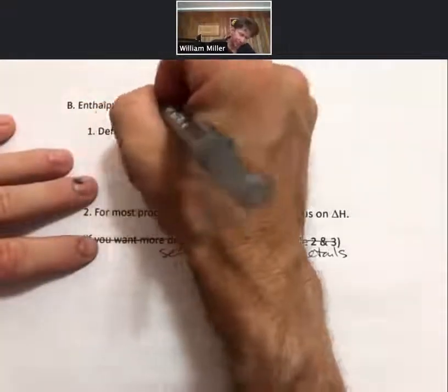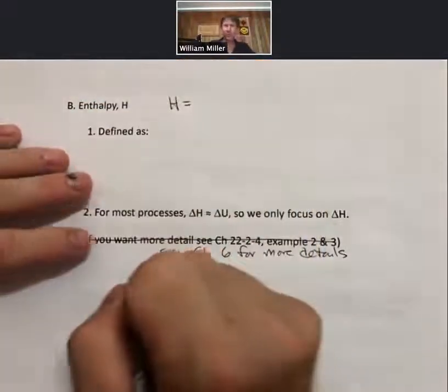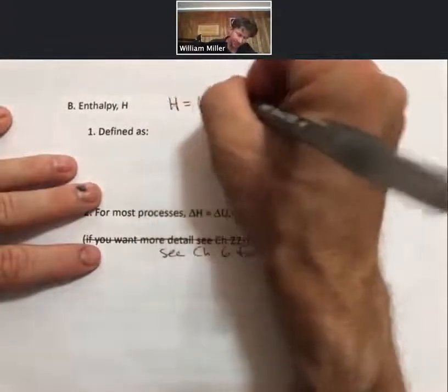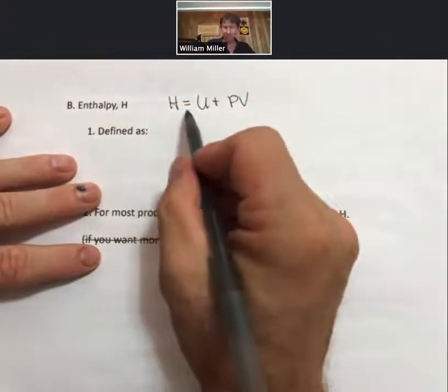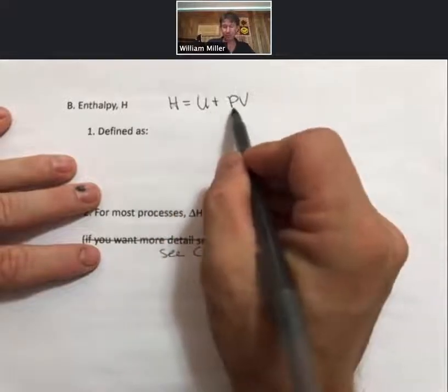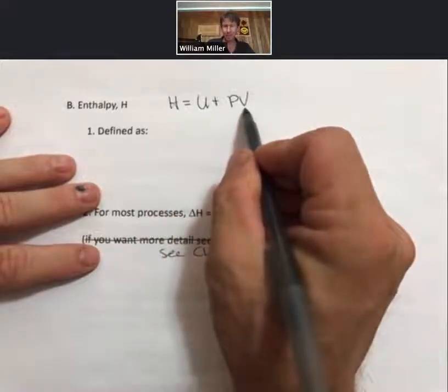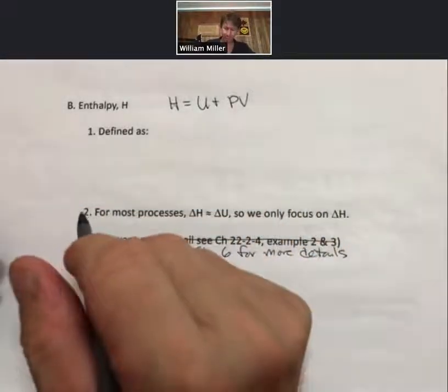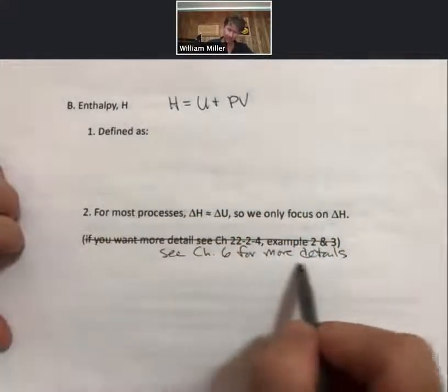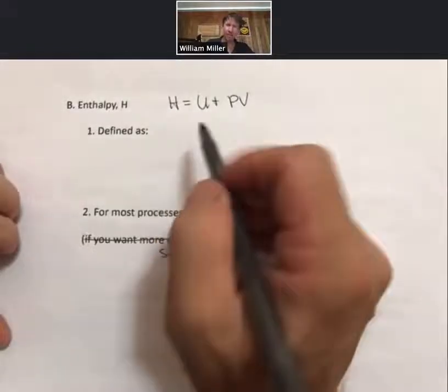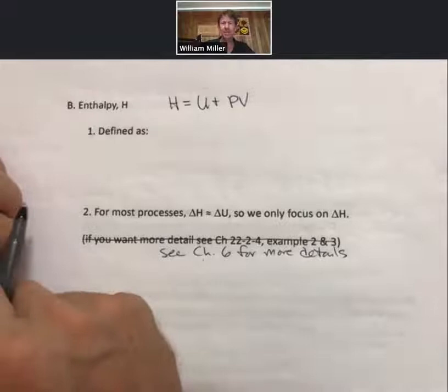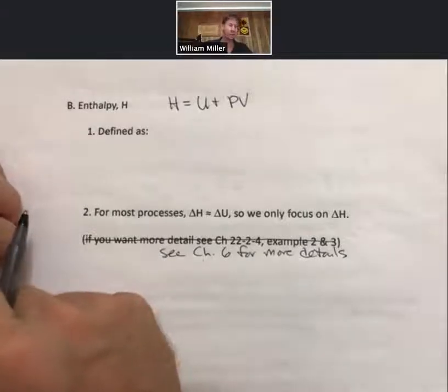Now enthalpy, its formal definition is U plus PV. So it is equal to the internal energy plus the pressure times the volume. And that's not going to be as useful to us as we would like. If you want more details about this particular relationship, please talk to me in office hours or see chapter 6 in the online text for more details.